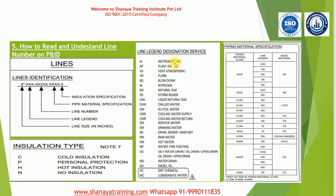For example, AI means instrument air — if it is written '4 inch AI,' there is a 4-inch line carrying instrument air. AP means plant air. VA means vent to atmosphere. VR means flare. NI means nitrogen is the service inside the line. NG is natural gas — if '10 inch NG' is written, we understand that natural gas is flowing through this line.